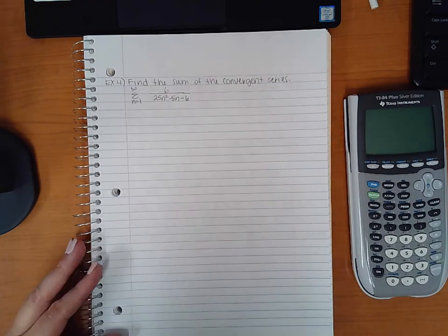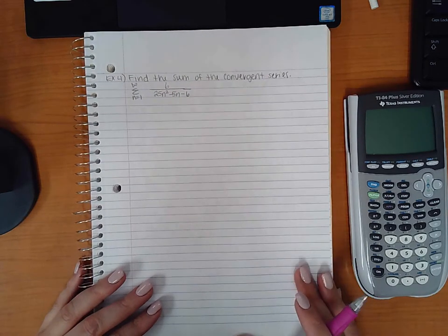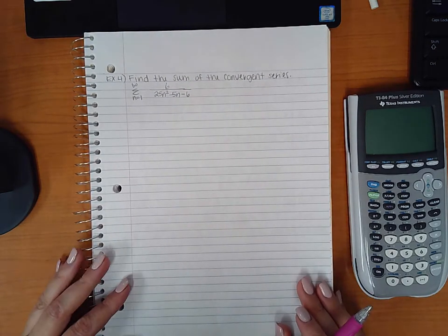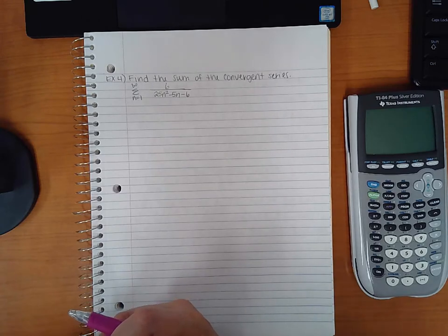This is section 9.2 continued. So we had example 4: find the sum of the convergent series. What we need to do is follow the same pattern that happened in example 3.